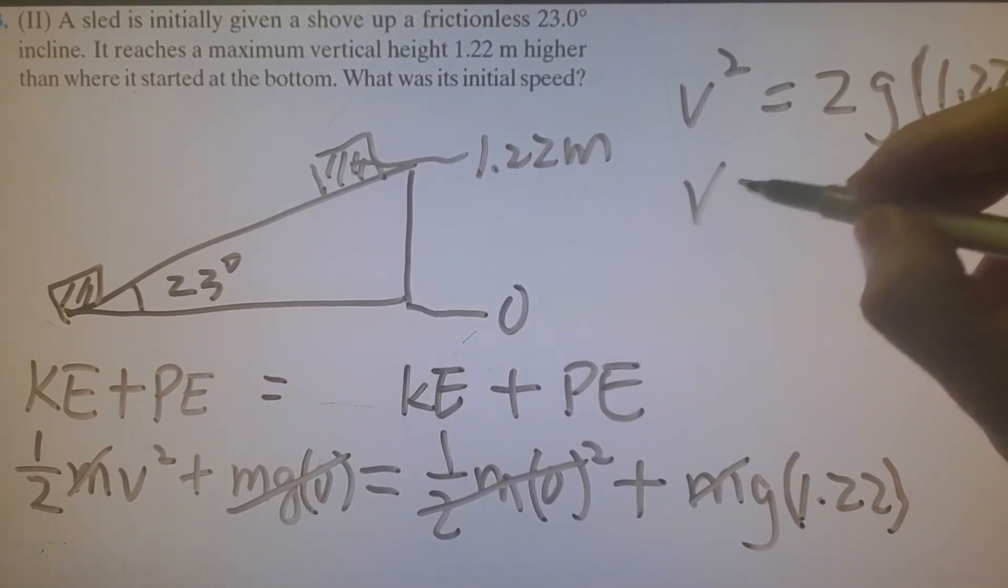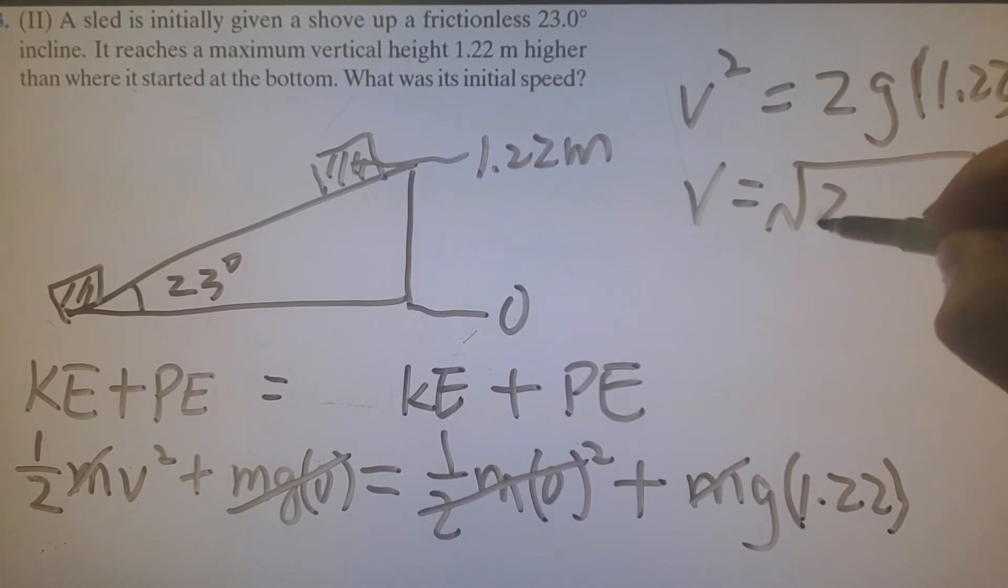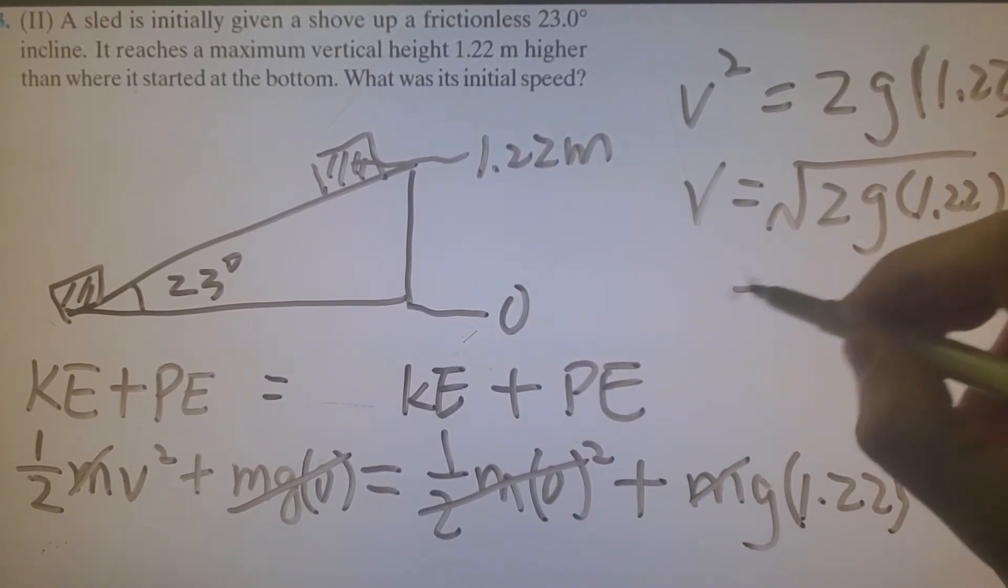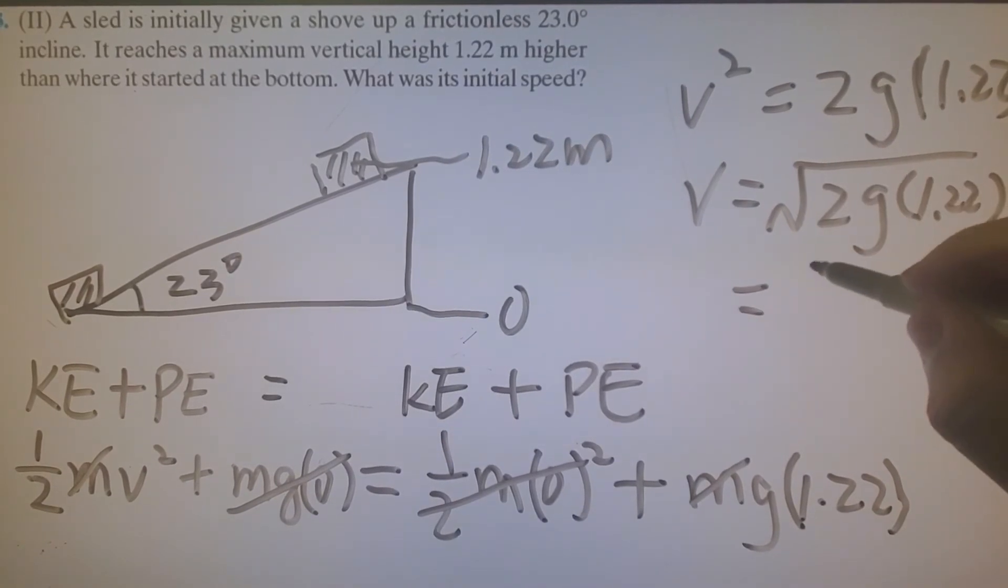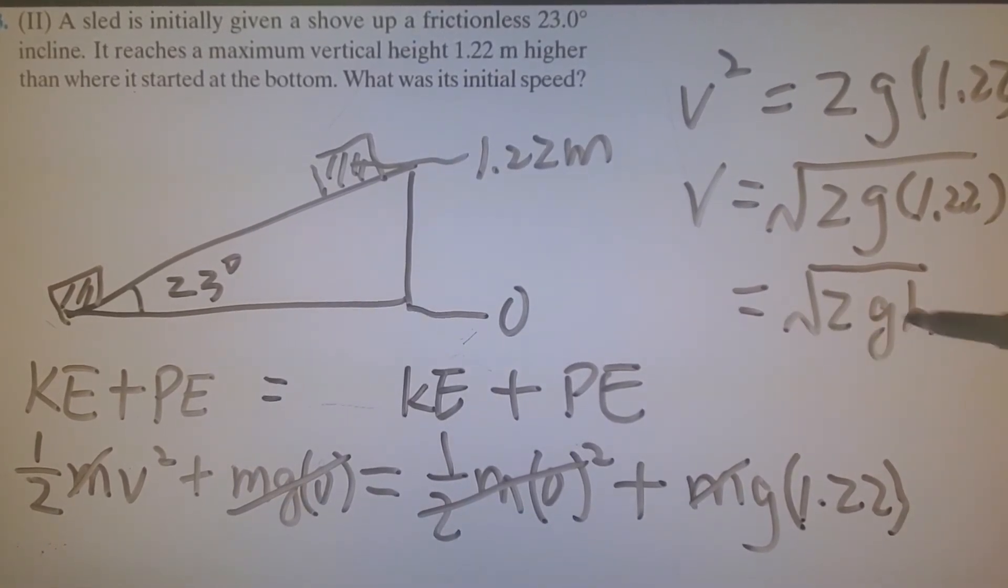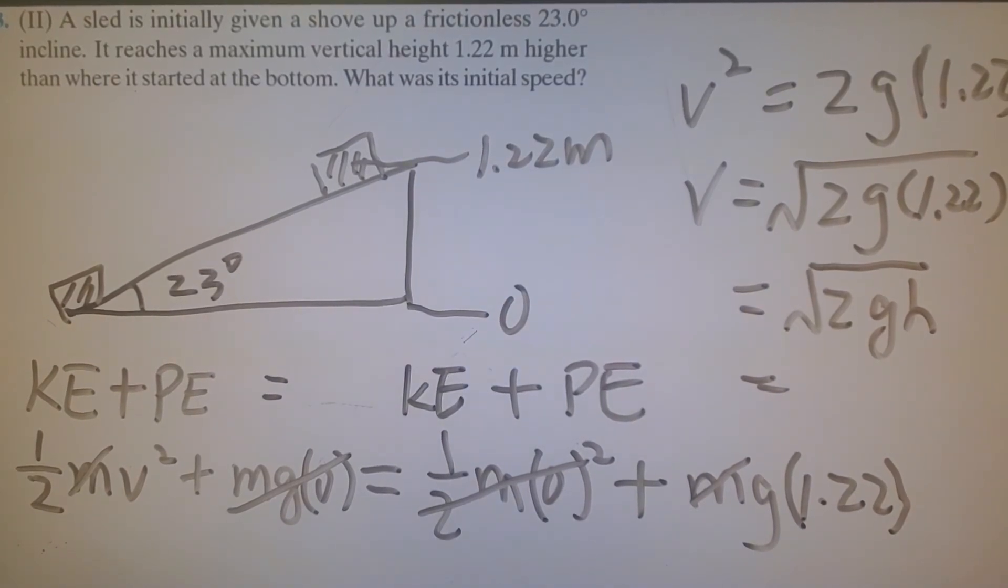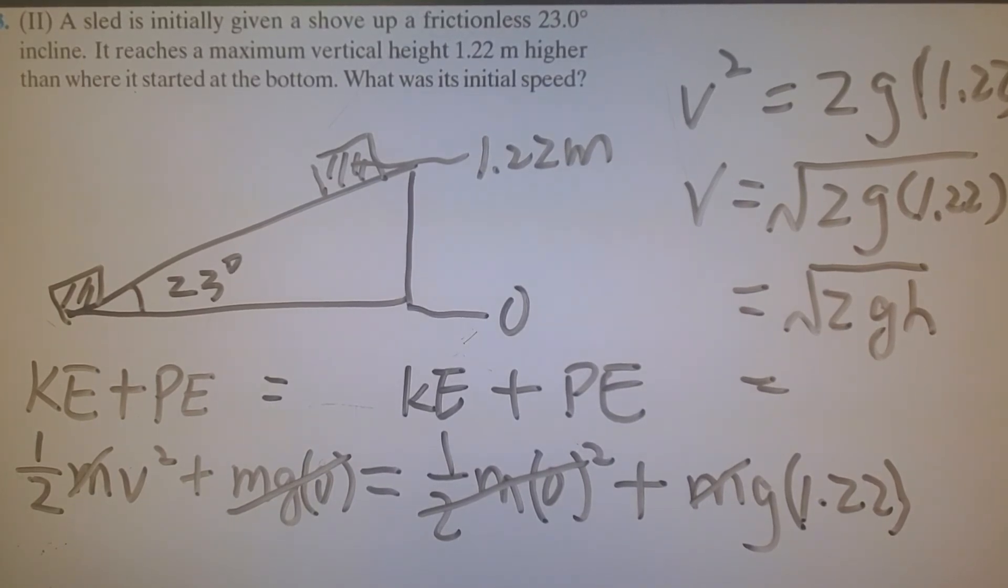v equals square root of 2 times g times 1.22. You can write this formula down: it equals square root of 2gh. So I plug into my calculator: 2 times 9.8 times 1.22, then take the square root. I got 4.9.